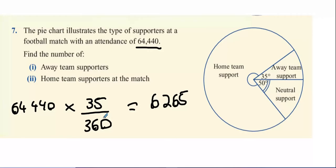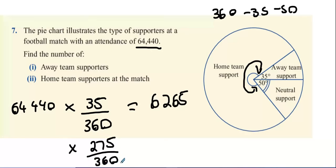Next thing. 64,440. You divide it by 360, which makes it smaller. Then you multiply it by 35. Next thing. How much angle is left? There's meant to be 360 degrees in total. But you've got to take away your 35 and you've got to take away your 50. This means, essentially, your home support is 275 degrees out of every 360 degrees. For every 360 supporters, 275 of them will be home team support. We'll multiply that by 64,440. 49,200.